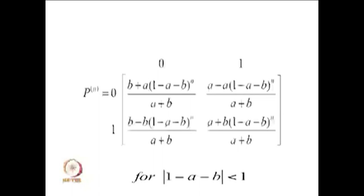Similarly, 1 to 0 is given as probability b, so 1 to 1 will be 1-b. This is the state transition diagram and the one-step transition probabilities for a given time-homogeneous discrete time Markov chain.